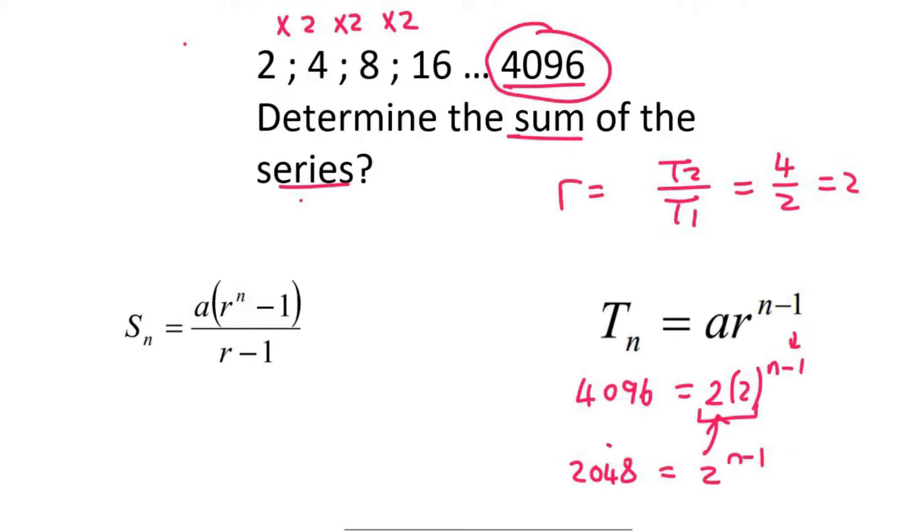So what I do is I type this number in on my calculator. I then push equals, I then push shift, and then I look for the button that has fact. And if you do that, you should end up with 2 to the power of 11.